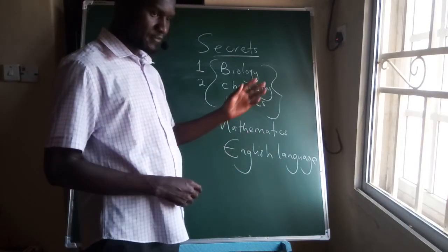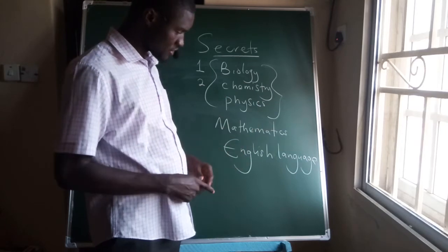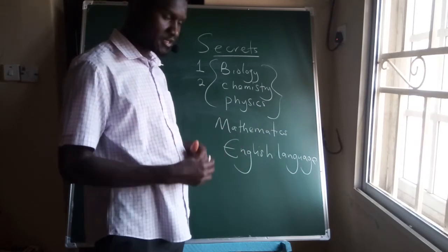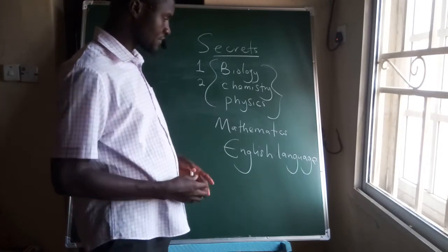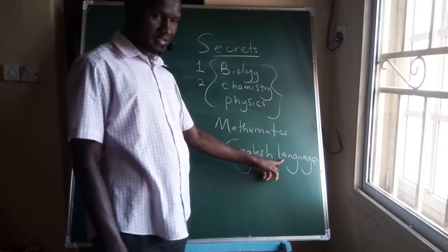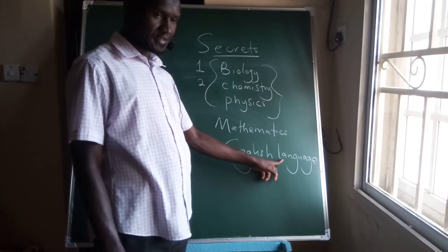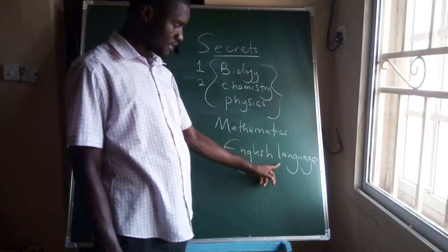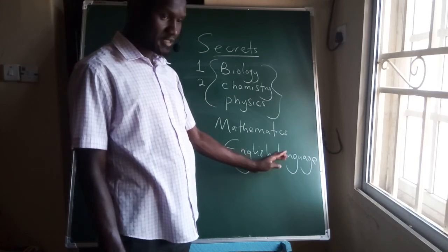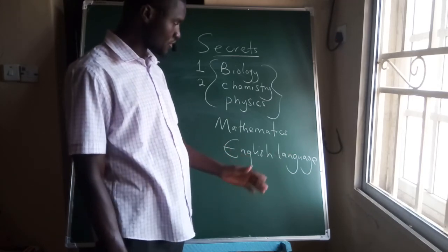Just leave those passages and go to simple aspects of the questions like synonyms, antonyms, nearest meaning, all these questions. Very short. You finish them first. Even before you study the comprehension part of English, after finishing the simple questions or the short questions, then you come back to your Chemistry and Physics.